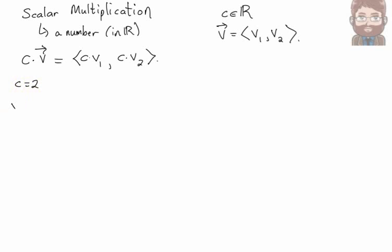So for example, let's say our scalar is 2, our vector is 3, 4. What do we get when we multiply 2 times the vector 3, 4? We'll get 2 times 3, 2 times 4, which simplifies to 6, 8. So the result is another vector.